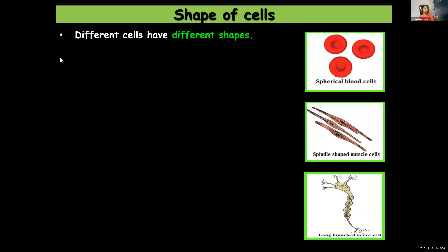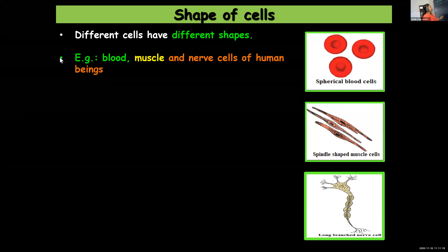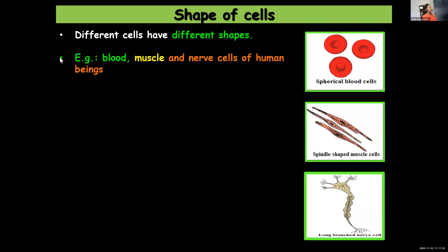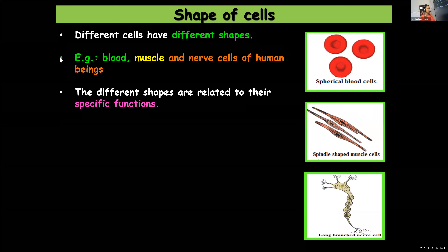More about the shape of cells — different cells have different shapes. All cells are not identical; they have different shapes, and the shape is decided by the function the cell has to perform. For example, red blood cells are spherical in shape, nerve cells are long and branched, and smooth muscle cells are spindle shaped, meaning pointed and tapering at both ends.